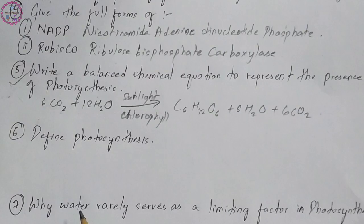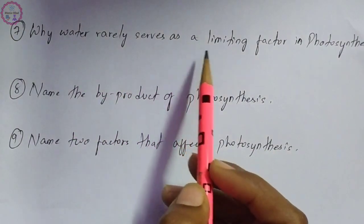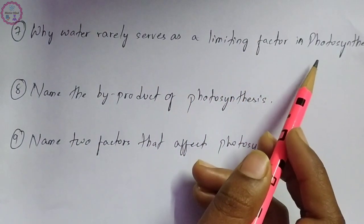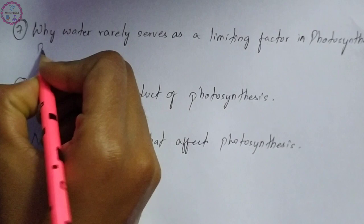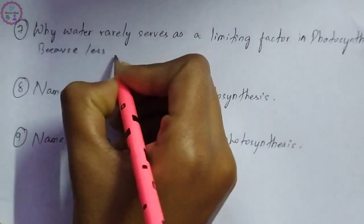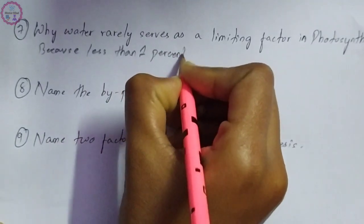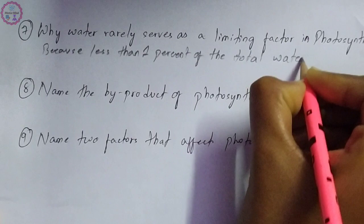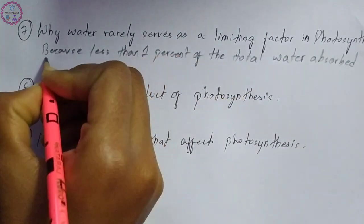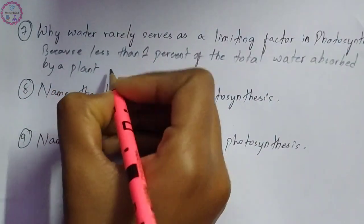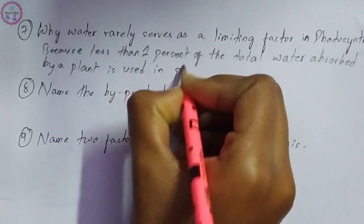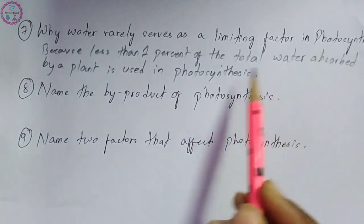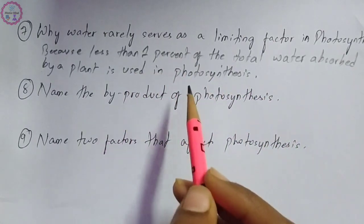Question number seven: why does water rarely serve as a limiting factor in the process of photosynthesis? Water rarely serves as a limiting factor in the process of photosynthesis because less than 1% of the total water absorbed by a plant is used in the process of photosynthesis.